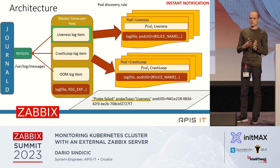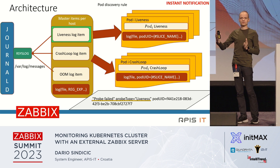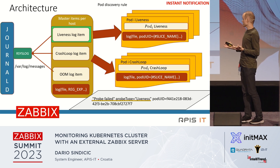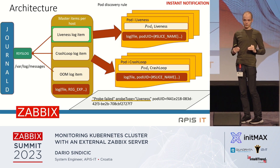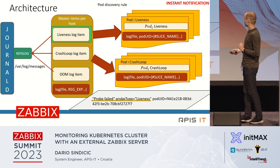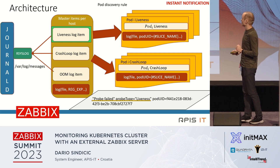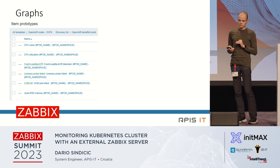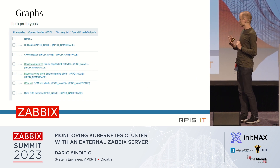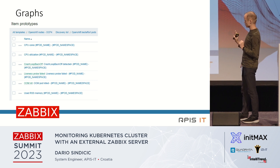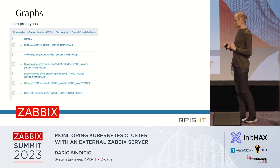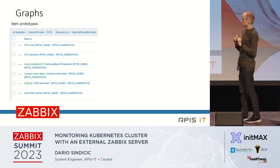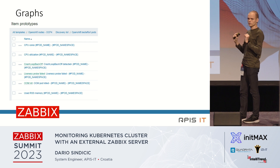If there are three or four liveness failures within two or three minutes we raise the trigger, and if there are none, using no-data we lower the trigger. By utilizing this approach we create only three file descriptors instead of 600 or 700. If you design your item prototypes in a specific way, you can create really wonderful graphs.